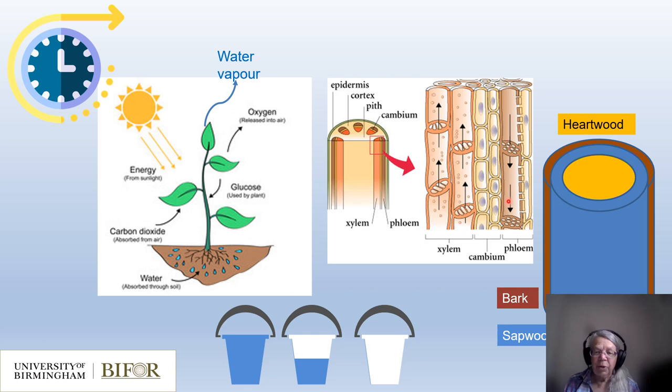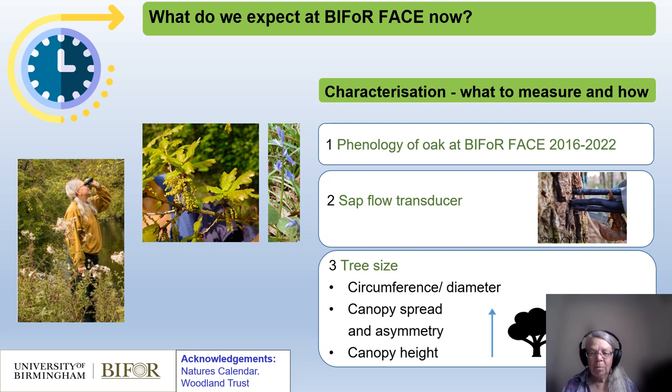Looking at the structure of the tree in this diagram, water flows upwards through the active xylem — the pipes, you might call them. In oak, this active xylem or sapwood forms a ring beneath the bark, like a cylinder. The central xylem cells, shown in yellow, no longer carry sap up the stem — this area is called the heartwood. This species is said to be ring-porous.